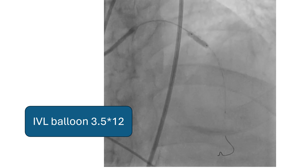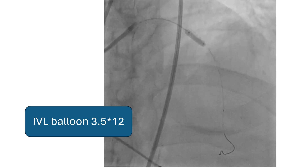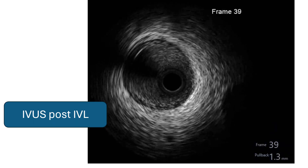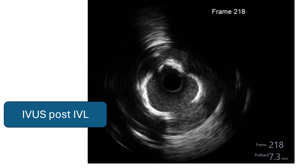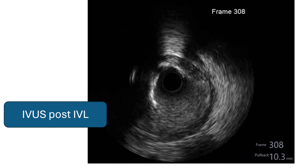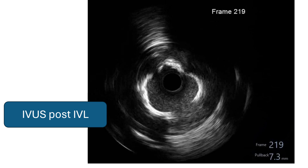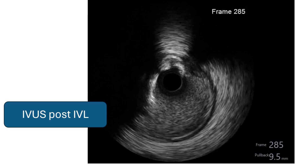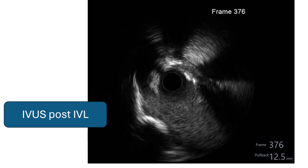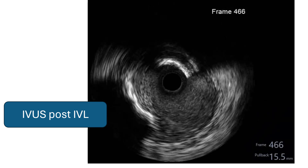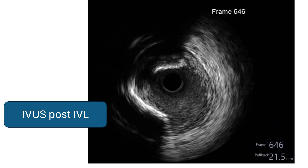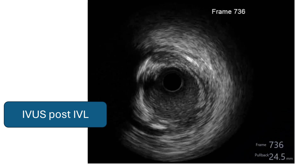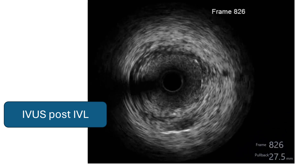We determined that further action was needed because of this ring of calcification, and that's why we used the IVL balloon 3.5 by 12. Several cycles were needed across the whole length of the lesion. This is the IVUS post-IVL. Here comes the bifurcation, and we can see how the ring was fractured — this is the 80 degree arc of calcium, but the ring was fractured here. This is the calcified part which is around 180 degrees.